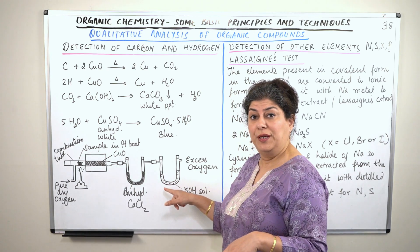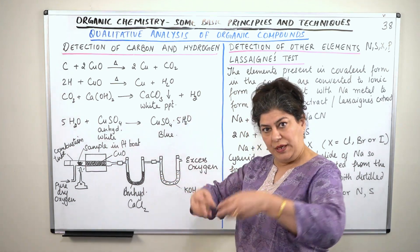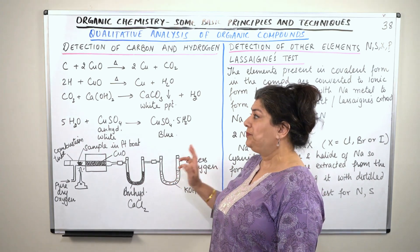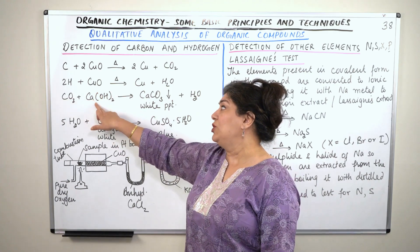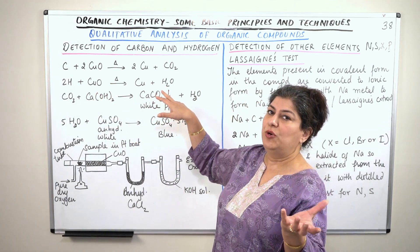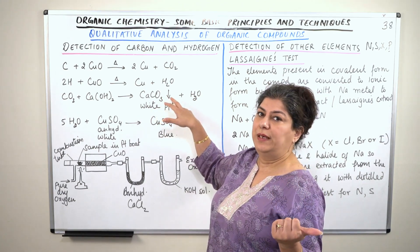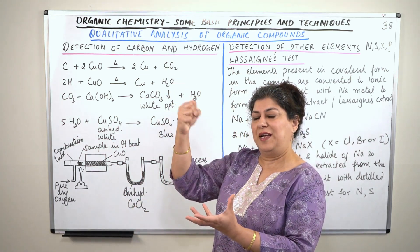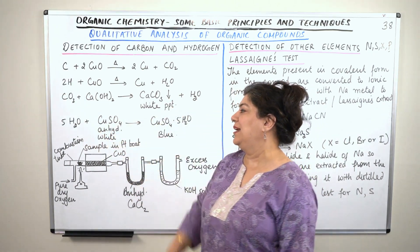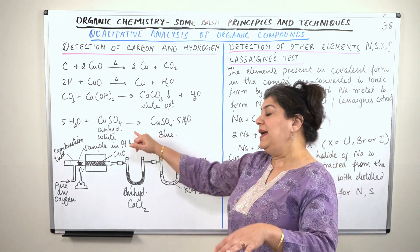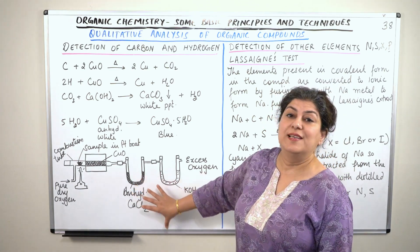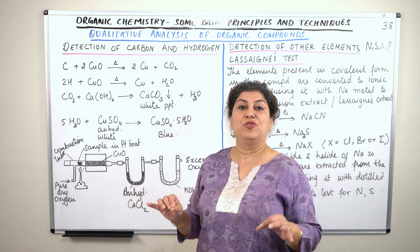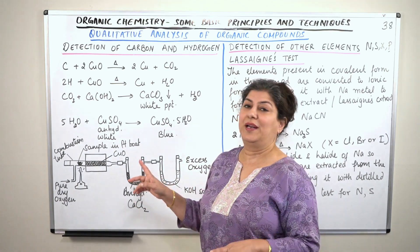We separate water using anhydrous calcium chloride and carbon dioxide using potassium hydroxide. Then we test each separately: the carbon dioxide extracted from the potassium hydroxide solution is passed through lime water, which gives a white precipitate. The water is extracted from the calcium chloride tube and passed over anhydrous copper sulfate, which turns blue — confirming that carbon and hydrogen were present in the compound.